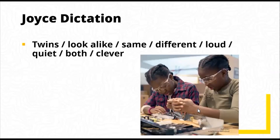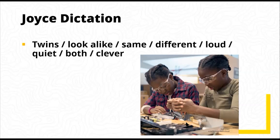If students find the prediction difficult, one nice thing you can do is show them the image that accompanies the reading. This makes it much easier to predict, but it also helps students to understand the target language. For example, we can use the image to help with the concept. We can ask questions like: who are these two girls? Are they friends or are they sisters? Do they look the same or do they look different? We'll probably get from that that they look the same — they're probably sisters.